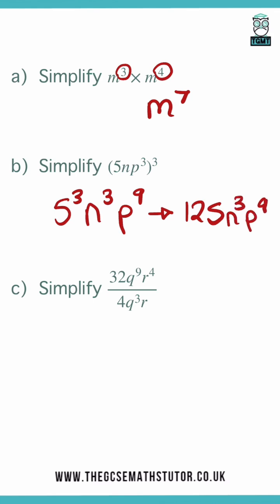When dividing, we divide the numbers but we subtract the powers. So 32 divided by 4 is equal to 8. Q9 and Q3, take them away, we get q to the power of 6. And then R4 and R1, that'd be r to the power of 3.